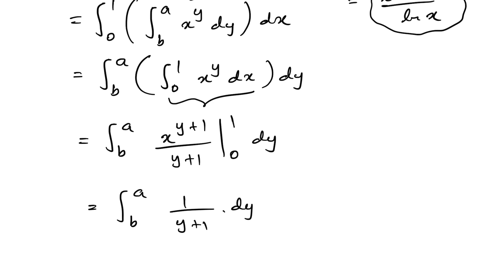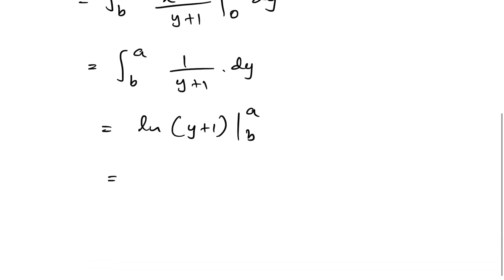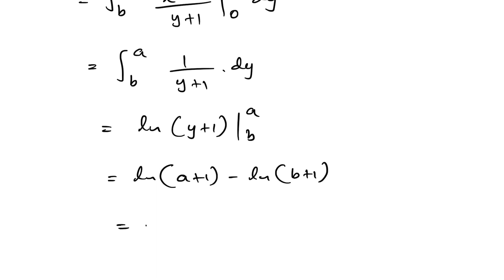So we have the integral from b to a of 1/(y+1) dy. We know that the integral of 1/(y+1) dy equals natural log of (y+1). Applying limits b to a gives natural log of (a+1) minus natural log of (b+1), which by log properties equals natural log of (a+1)/(b+1).